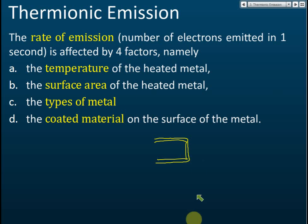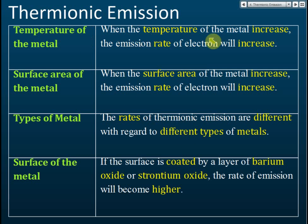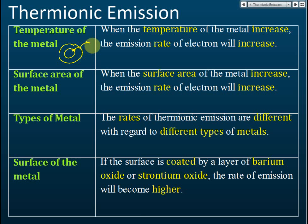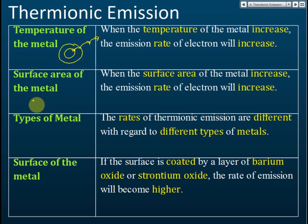When the temperature of the metal increases, the emission rate of electrons will increase. This is reasonable because when the temperature is high, more electrons can jump out from the atoms. More heat energy is applied to the electrons, and when the electron absorbs the heat it will jump to higher levels and then jump out from the atom.